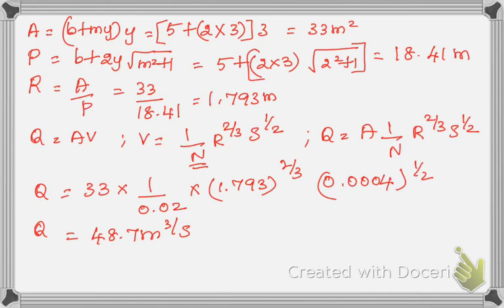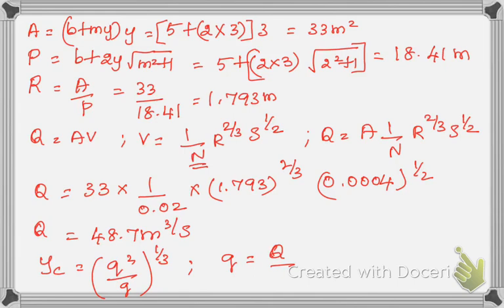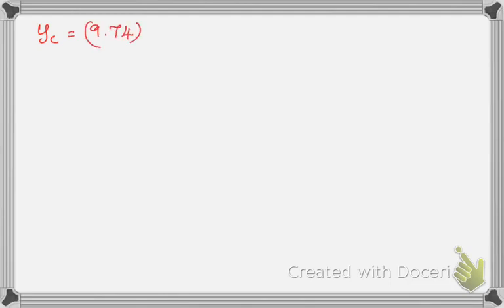Now I have to calculate the critical depth. The critical depth Y_C = (q²/g)^(1/3), where q is the unit discharge q = Q/B = 48.7/5 = 9.74 m²/s. So Y_C = (9.74² / 9.81)^(1/3) = 2.13 meter.